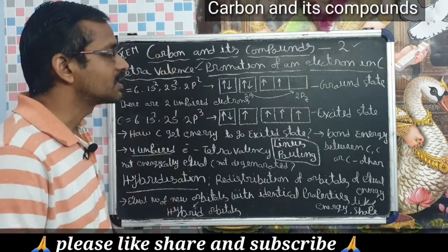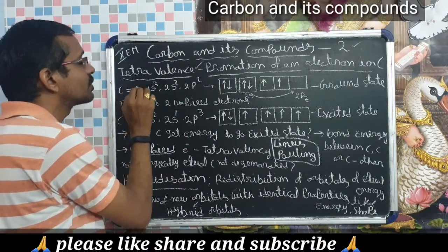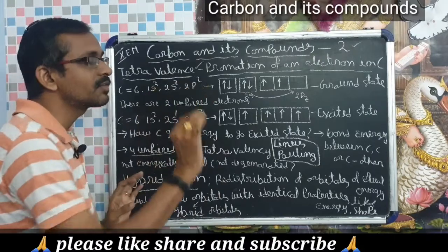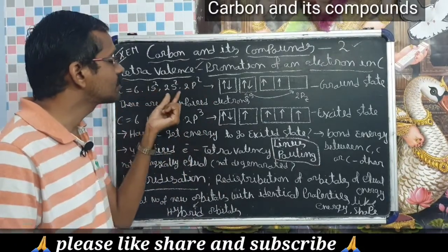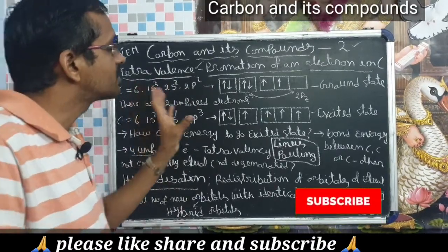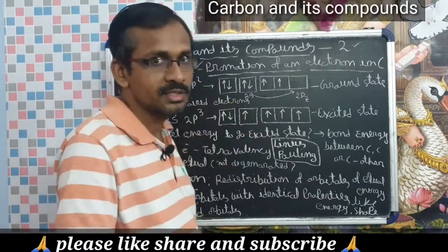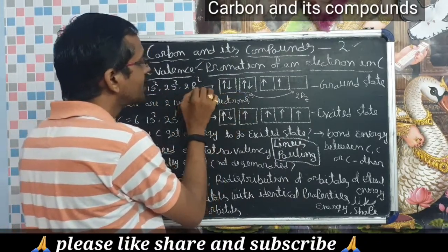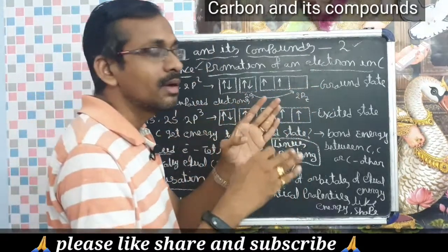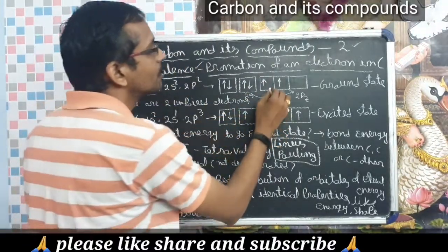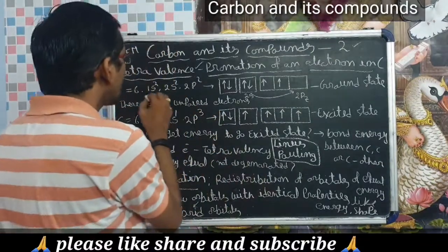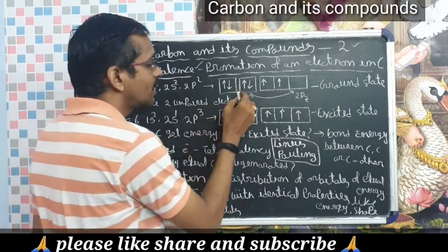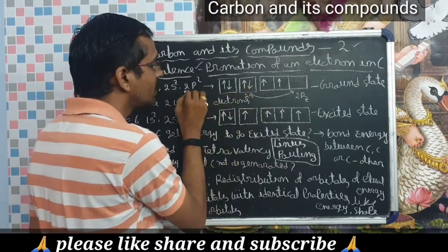To understand tetravalency, we observe the carbon atomic structure. Carbon's atomic number is six. The electronic configuration of carbon is 1s2, 2s2, 2p2. If you draw that electronic configuration in the form of boxes, 1s2 is indicated by one box, 2s2 by one box, and 2p2 fills the three degenerate p orbitals — px, py, pz. Carbon has six electrons: the first two fill 1s, the next two fill 2s, and the remaining two fill 2p.